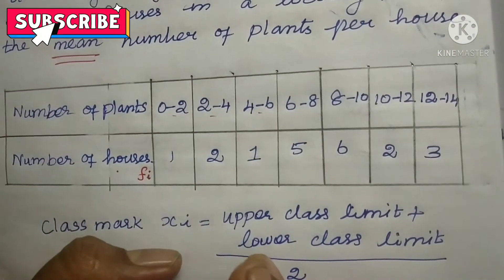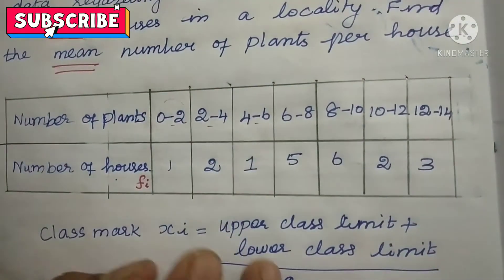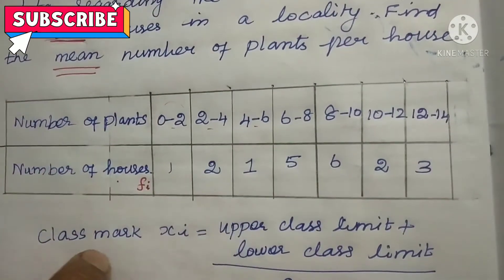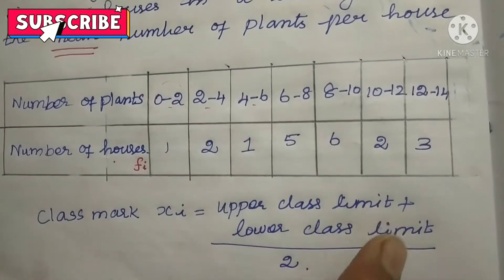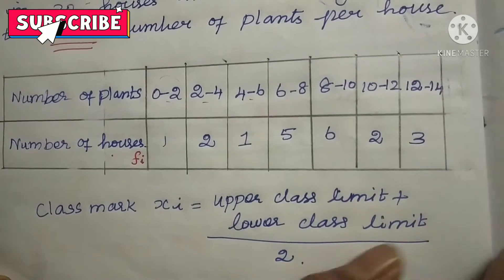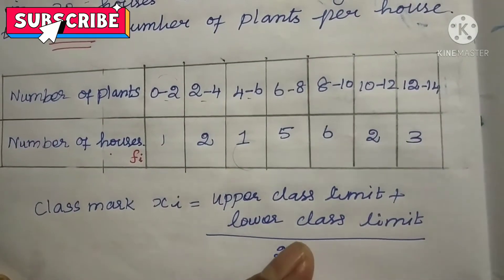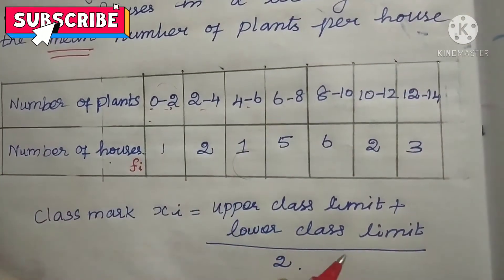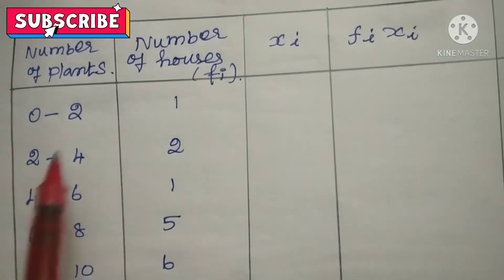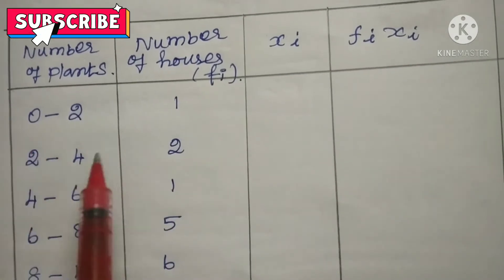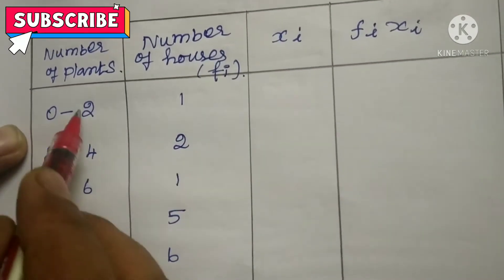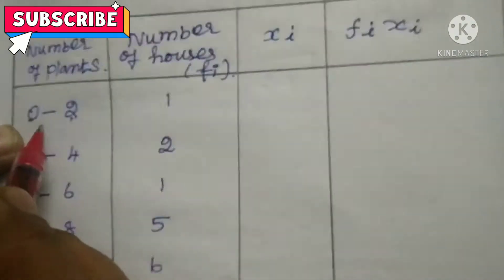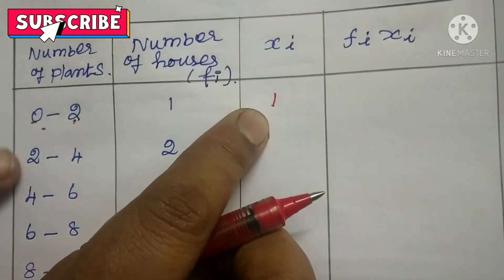This we have to calculate. Here it is given in intervals, so we need Xi. For that, class mark Xi equals upper class limit plus lower class limit divided by 2. So 2 plus 0 divided by 2 is 1.